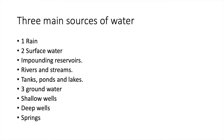There are three main sources of water. The first is rain. The second is surface water, which includes impounding reservoirs, rivers and streams, tanks, ponds and lakes. The third is groundwater — shallow wells, deep wells, and springs.